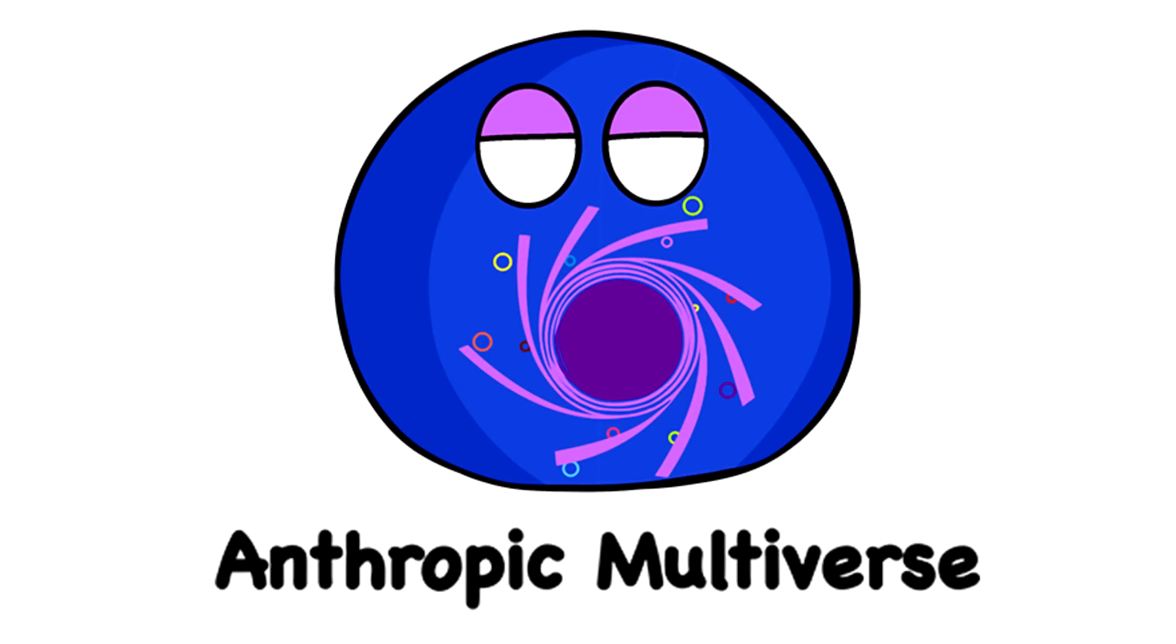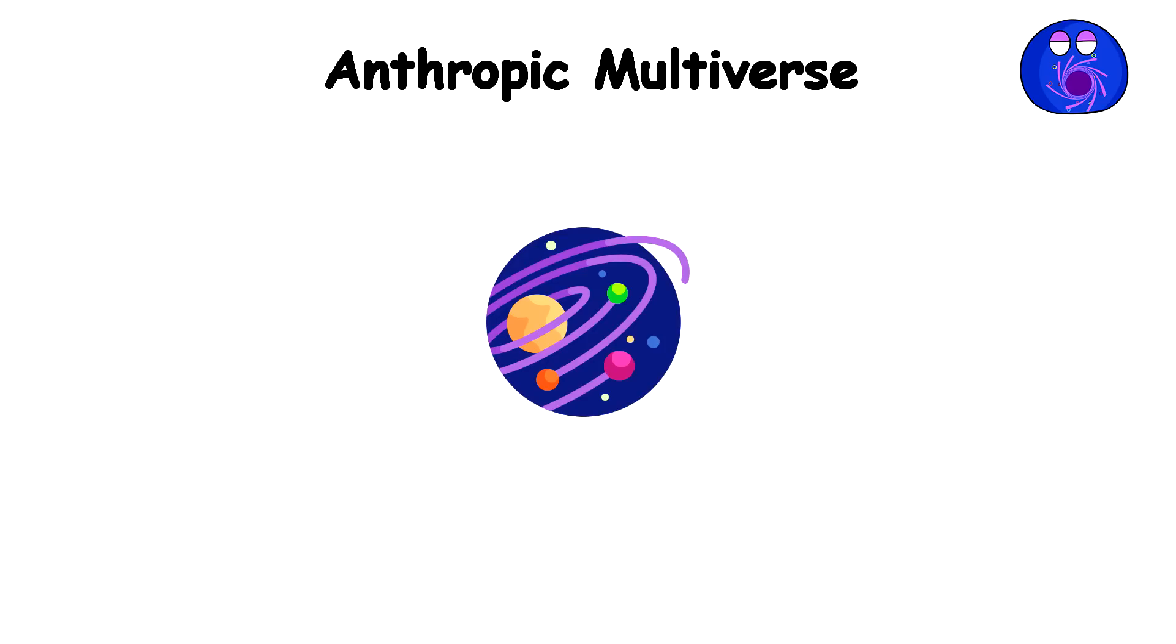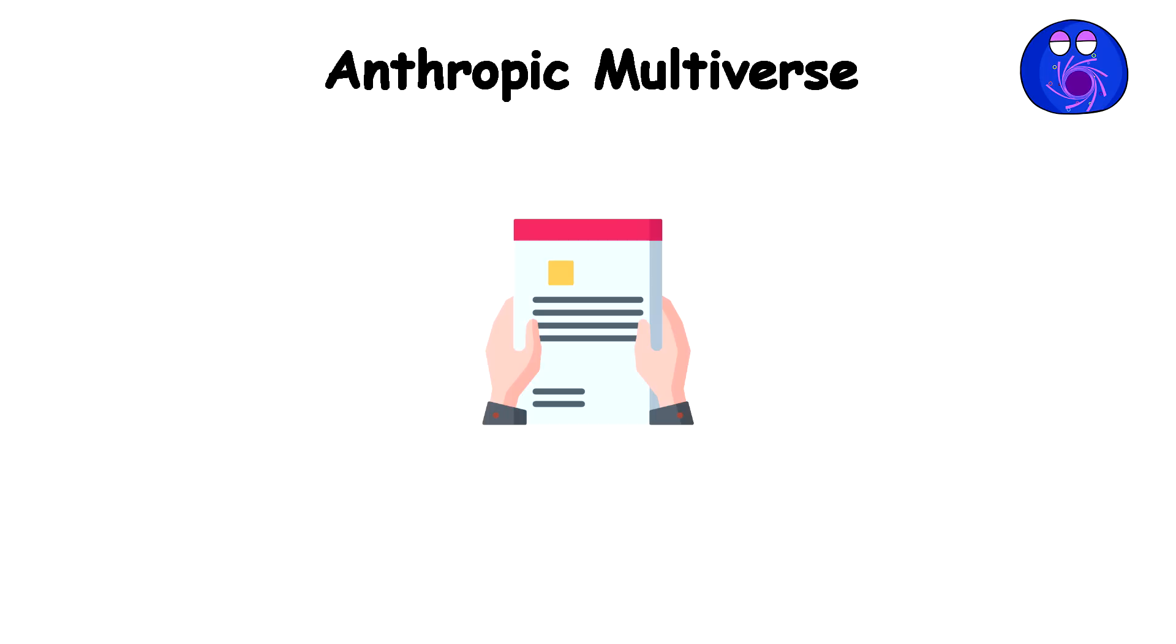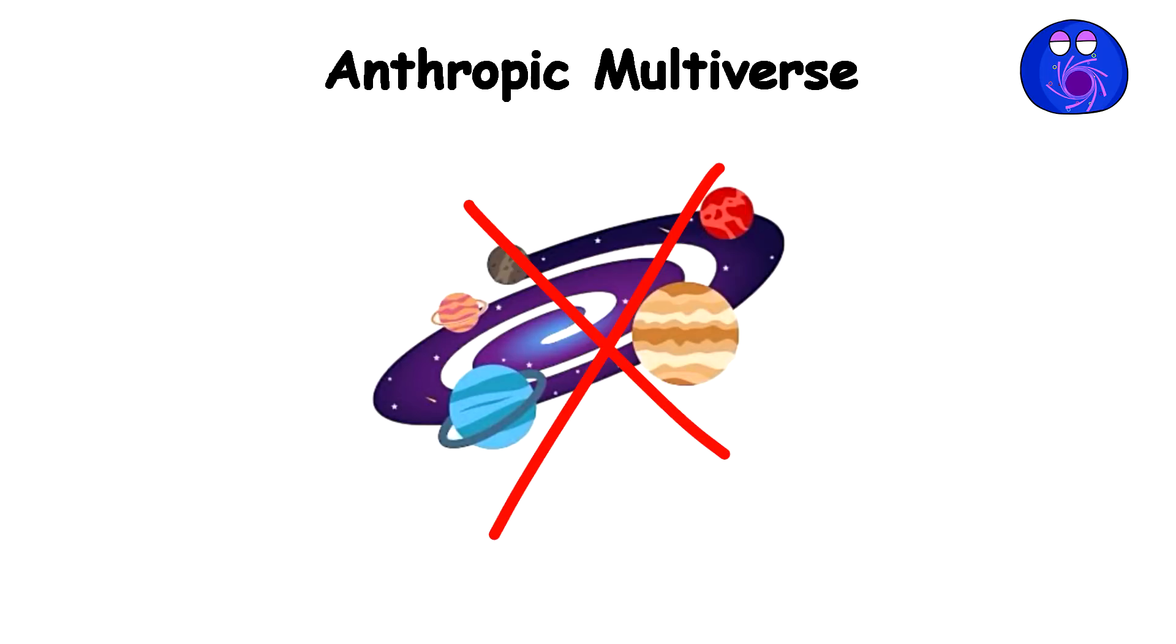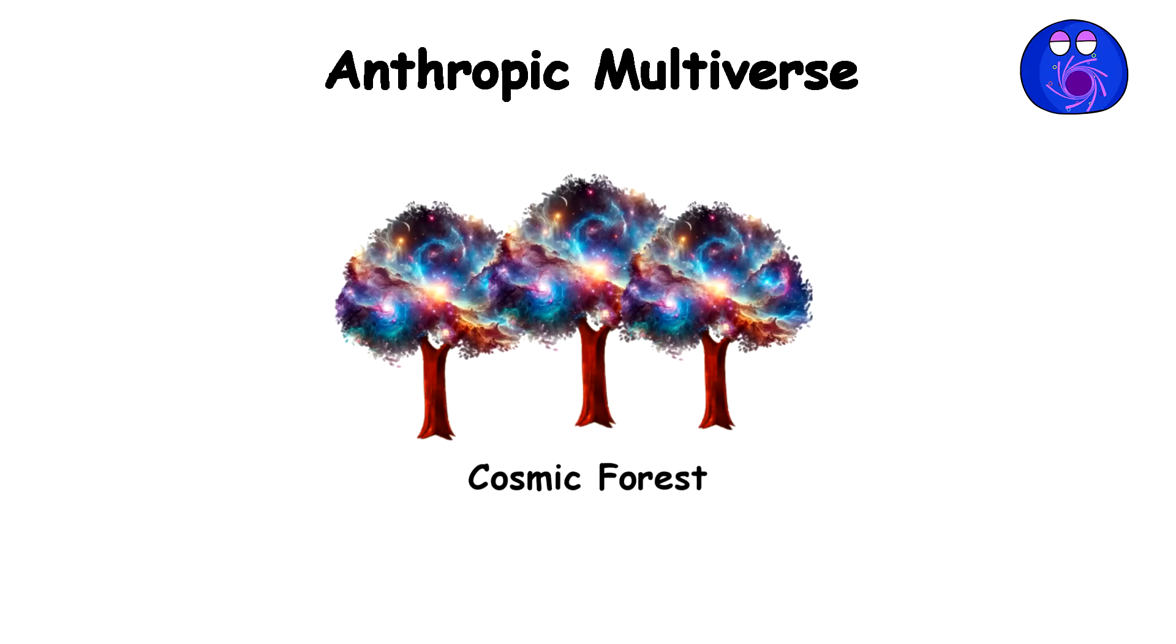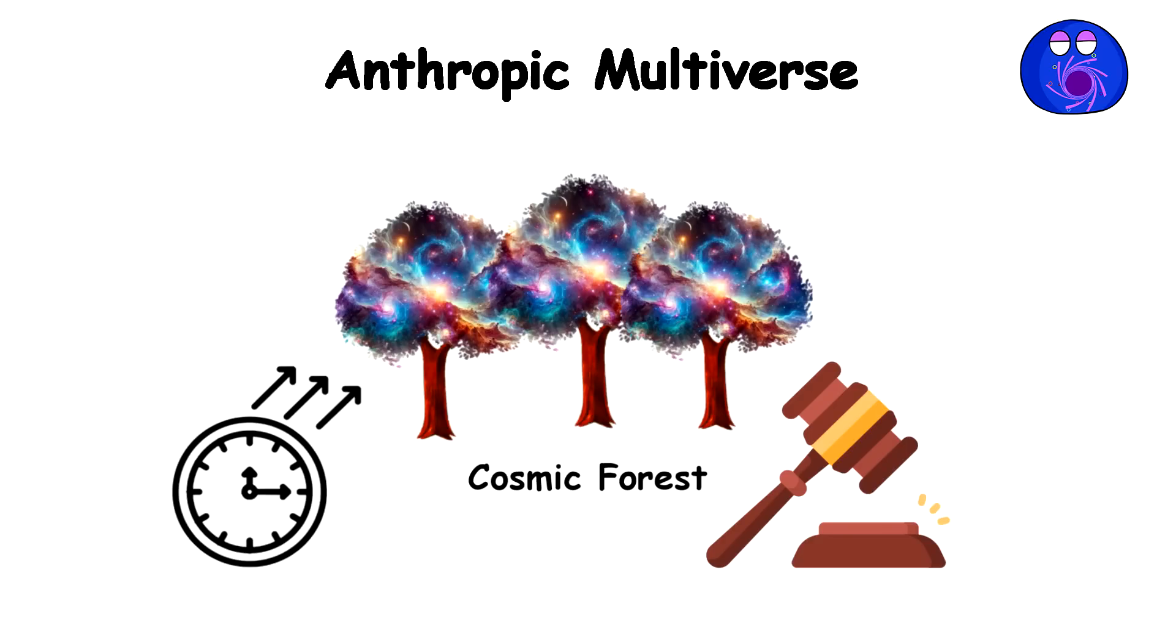Anthropic Multiverse. The anthropic multiverse theory takes that concept of branching timelines and explodes it into infinity. It proposes that our universe isn't the only one, but of countless universes in a huge multiverse. Put yourself in a cosmic forest, each tree a unique universe with its own set of physical laws and constants like the speed of light or the strength of gravity.